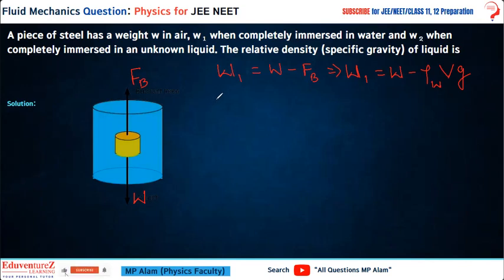So we found w1's value. Now for the second equation: when we immerse it in an unknown liquid, its weight becomes w2. Apparent weight equals actual weight minus upthrust. Here the upthrust is ρl × V × g, where ρl is the density of the unknown liquid, and V is the total volume of the body.